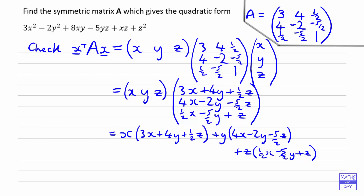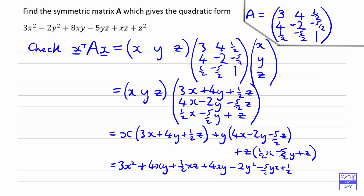Let's see what that gives us — it's looking good because we're starting off with 3x². Then we've got 4xy plus (1/2)xz from the first bracket. The second bracket gives 4xy minus 2y² minus (5/2)yz. The last bracket gives (1/2)xz minus (5/2)yz plus z².